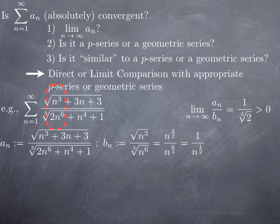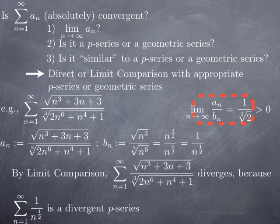Then you look at the limit of a_n / b_n, and in this case it equals 1 over the cube root of 2, which is a non-zero constant, so the limit comparison test applies. That means the series of a_n and the series of b_n behave the same. But the series of b_n = 1/n^(1/2) is a p-series with p = 1/2 ≤ 1, which is divergent, and therefore the original series is divergent as well.